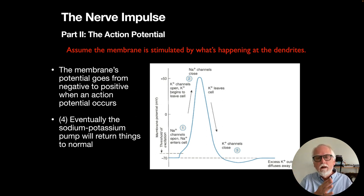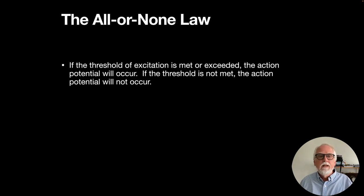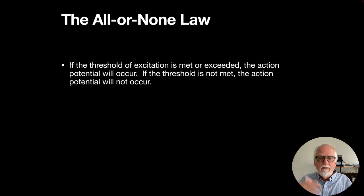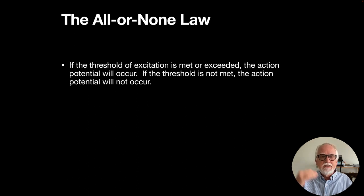This all happens very quickly, beginning at the axon hillock and continuing all along the axon to the axon terminals. From the axon hillock onwards, it's basically an all-or-none law: if the threshold of excitation is met or exceeded, the action potential occurs — and once it occurs, it can't stop. If the threshold is not met, the action potential will never occur. There's no in-between; a neuron can be highly stimulated but still not fire if it hasn't reached that cutoff threshold.